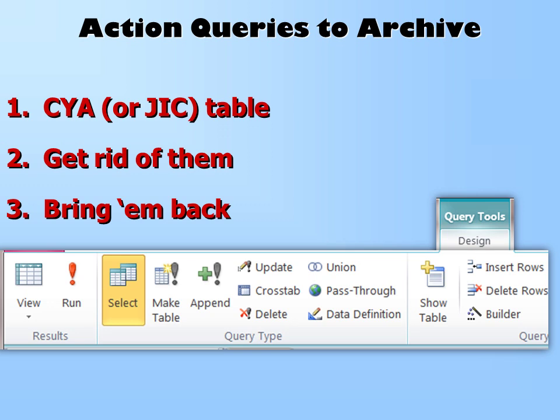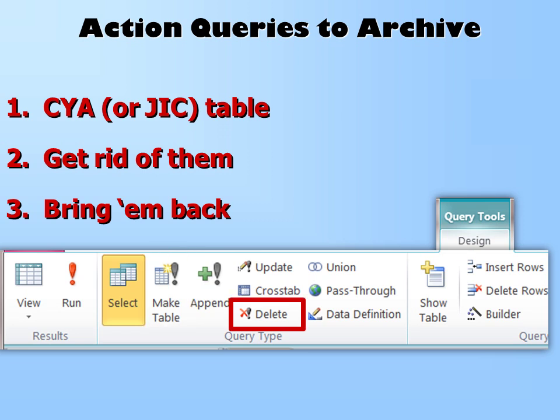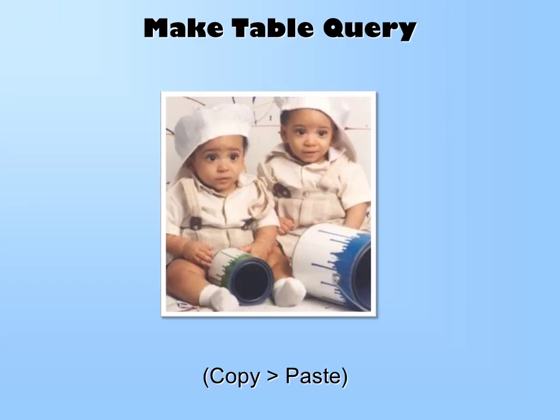We're going to look at three different kinds of queries. The CYA or JIC — Just In Case — table: I want to make a table to put the records in, just in case. Then I want to get rid of them using a Delete query. And then if you want to bring them back, we use the Append query. Essentially, we want to do a copy and paste — make a duplicate of the data.